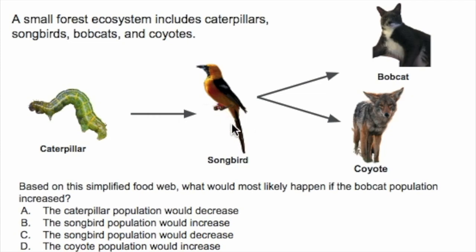On practice test questions put out by the GED testing service, this is how they show it — with the arrows pointing towards the animal higher in the food chain. Just keep this in mind for your test. That's the first thing to know about interpreting a diagram like this.